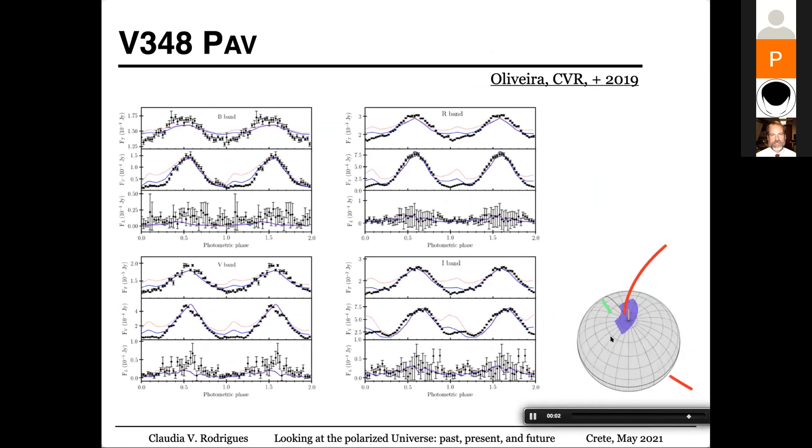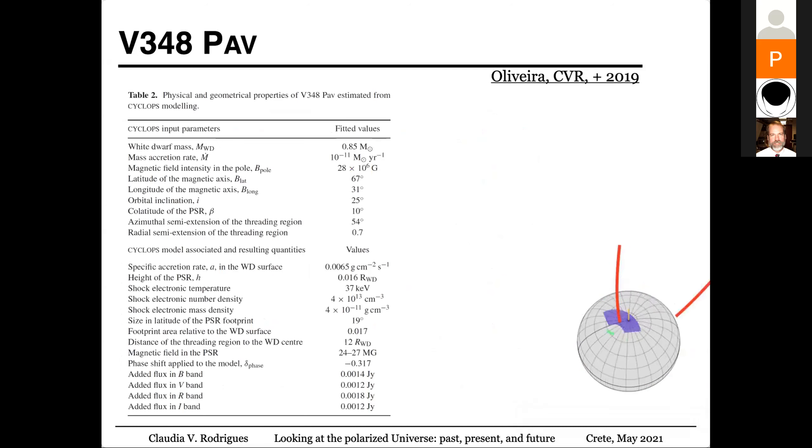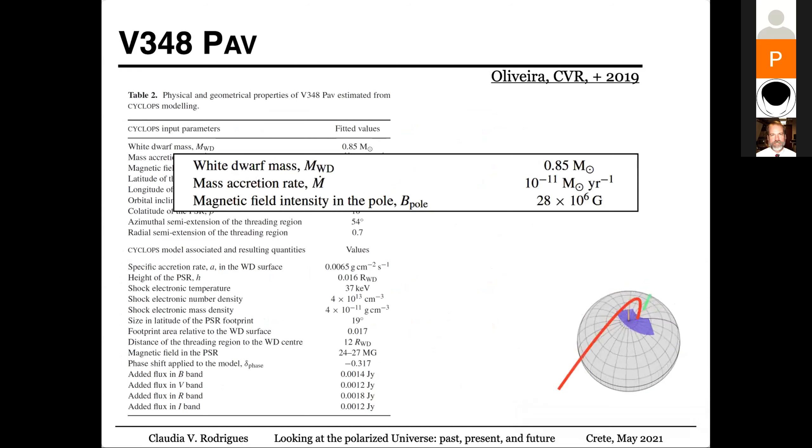And this variation is caused by the white dwarf rotation. And this figure shows exactly the geometrical fitting that it's necessary to explain this data. The blue lines is our model for this object. And our model has a lot of parameters, but I highlight here the most important in terms of the physical understanding of those objects.